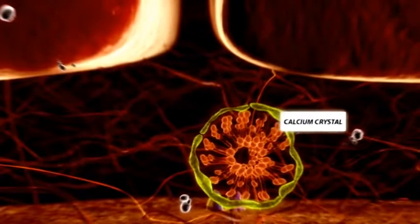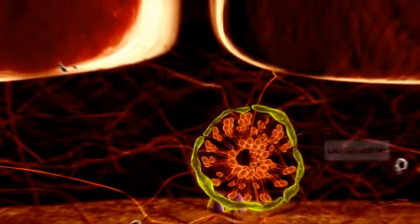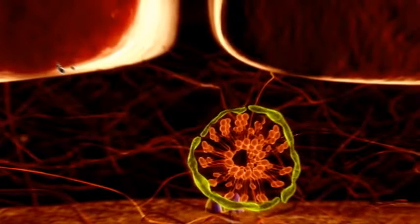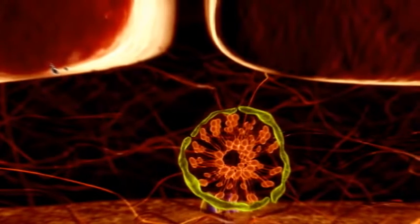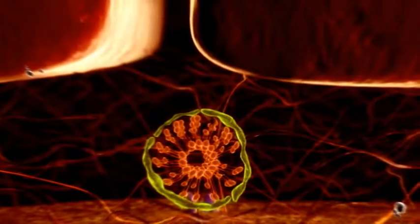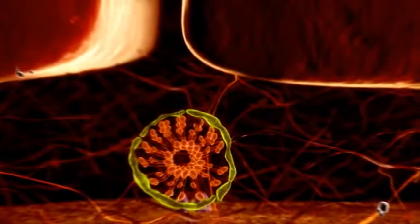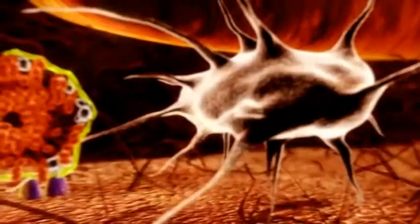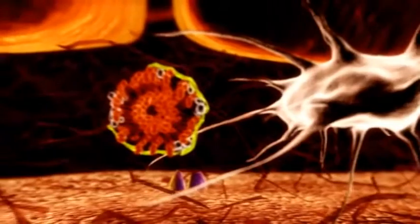The vitamin K-dependent MGP is known to be the strongest inhibitor of arterial calcification. As the extracellular fluid is oversaturated with calcium and phosphate, the body needs these natural inhibitors to prevent unwanted calcification.